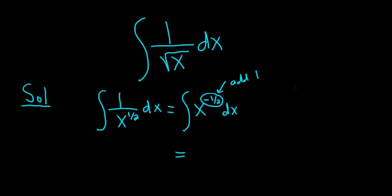So in this case, it'll be negative 1 half plus 1. That's really negative 1 half plus 2 halves. And when you add these numbers, you just get 1 half.